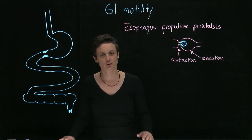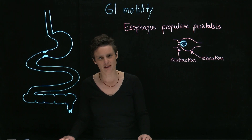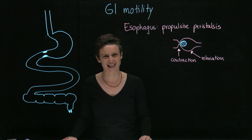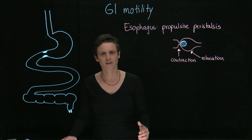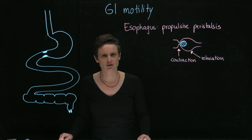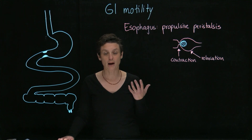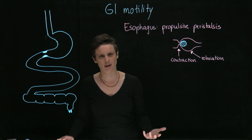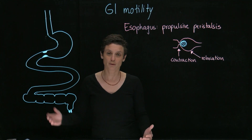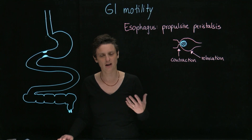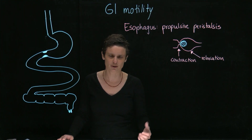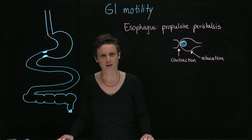In this video, I want to give you an introduction to GI motility. We'll walk through all the different segments of the GI tract and figure out what the major motility pattern is for each. The GI tract is all about absorbing nutrients and expelling waste. To do that, we first need to move food along the GI tract to the small intestine to get all the nutrients out, and then to expel the waste.